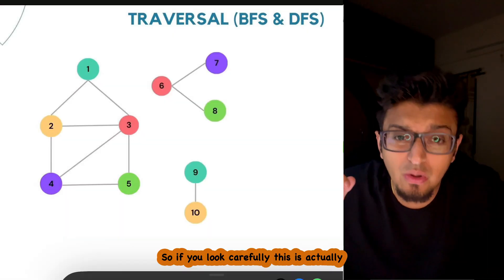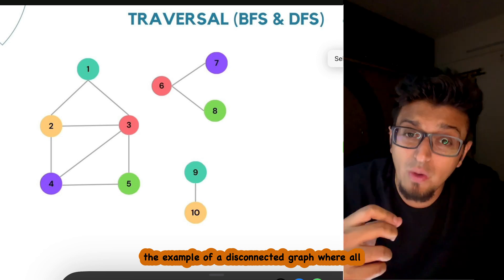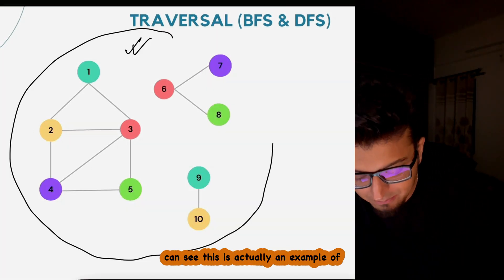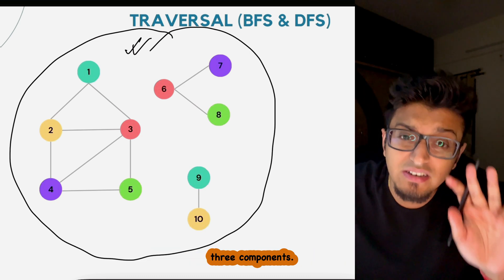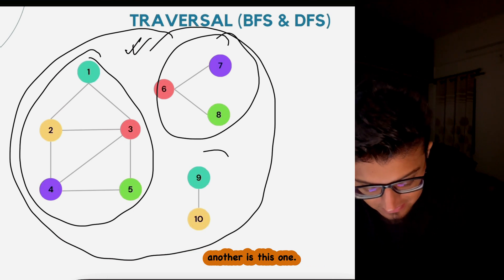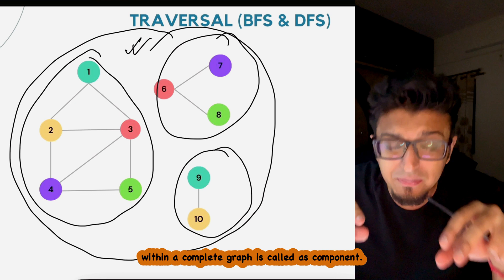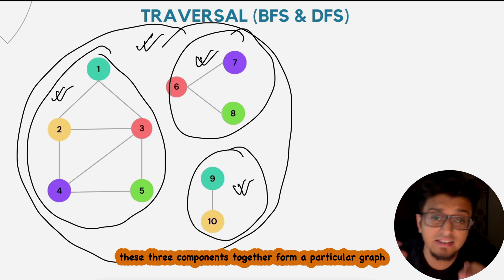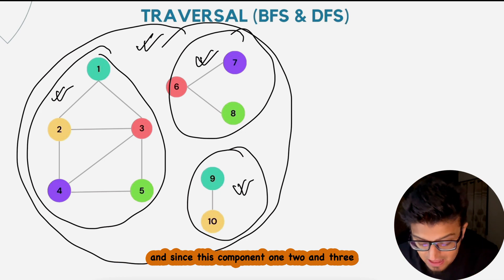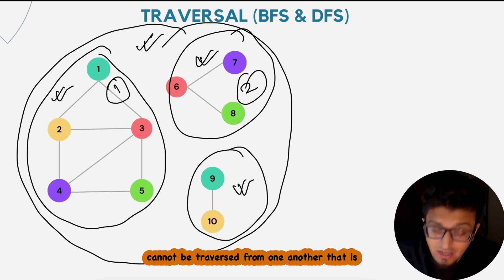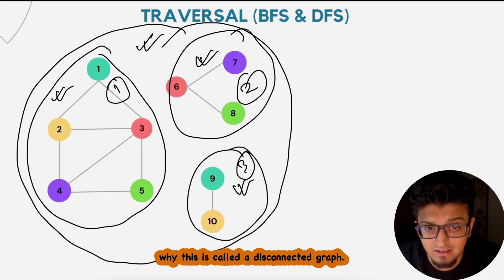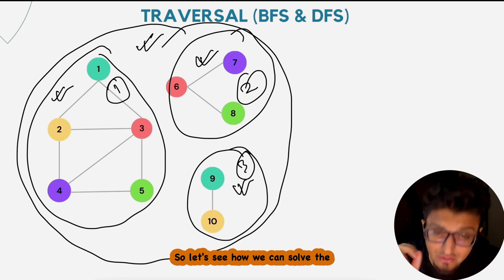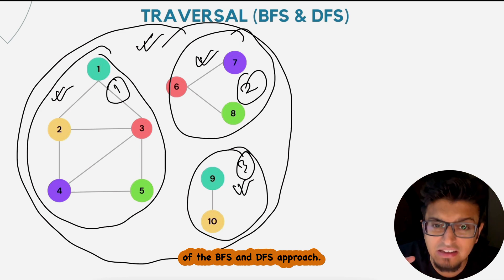A disconnected graph is one where all nodes cannot be traversed from a single starting point. For example, within a graph there can be three components — subgraphs formed within the complete graph. These three components together form the graph, but since component one, two, and three cannot be traversed from one another, it is called a disconnected graph.